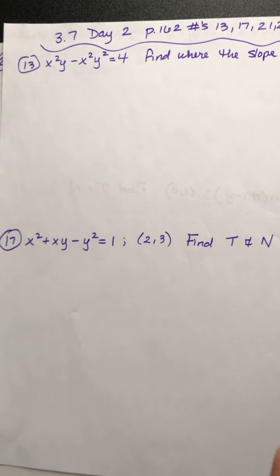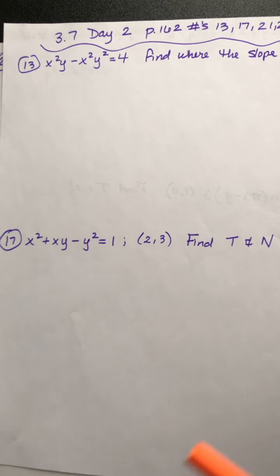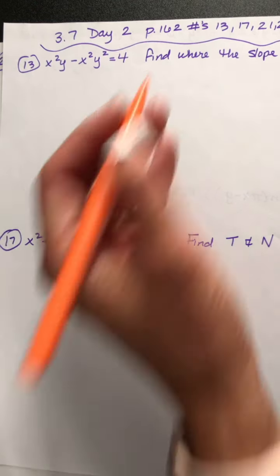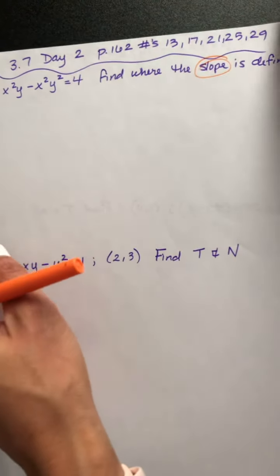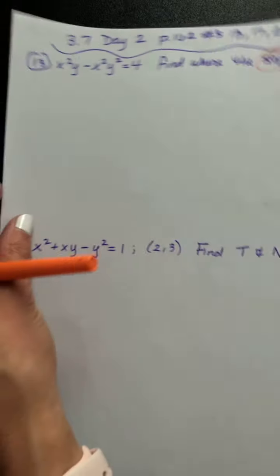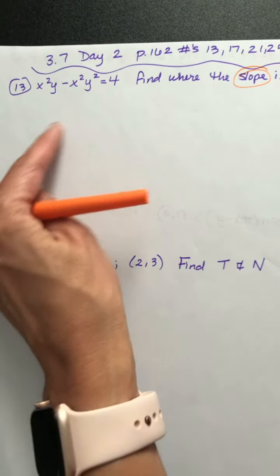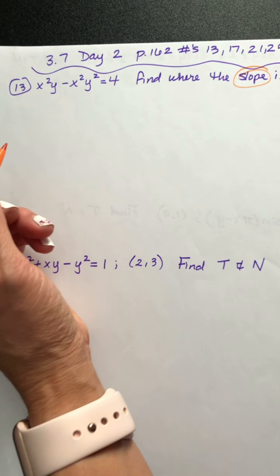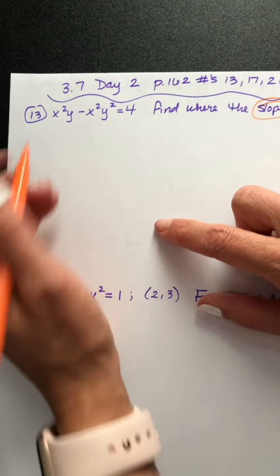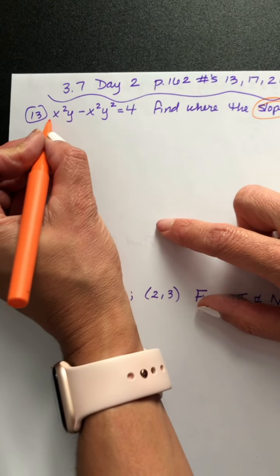We need to implicitly differentiate x squared y minus x squared y squared equals 4, because we need to find where the slope is defined. So anytime we're asked to find the slope, we know that means we need to find the derivative. So because we have x's and y's, we have to differentiate implicitly.